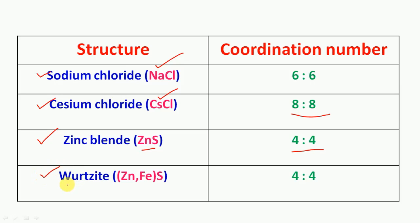Fourth one, wurtzite. The formula is (Zn,Fe)S. Coordination number 4:4.